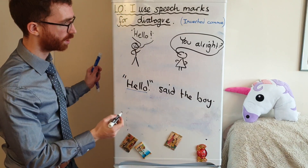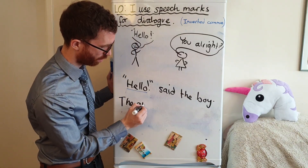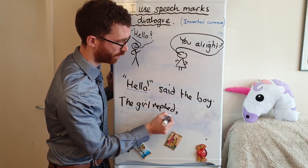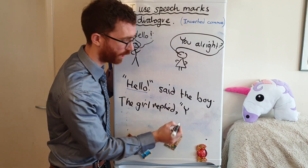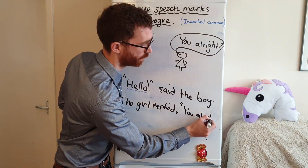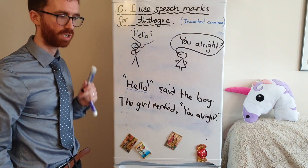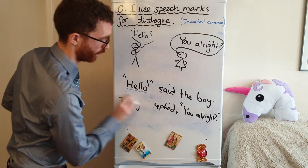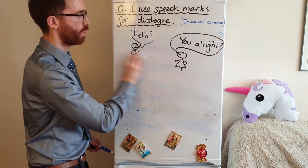Another rule: new line, new speaker. So on a new line: 'You alright?' replied the girl. The girl replied — comma — start of her sentence needs a capital letter: 'You alright?' — she's asking a question, so a question mark — then close the speech marks.